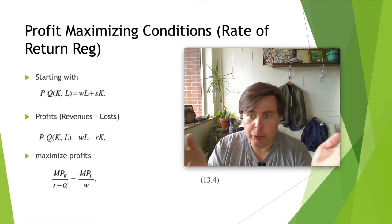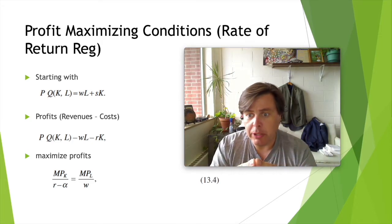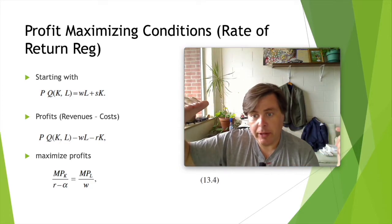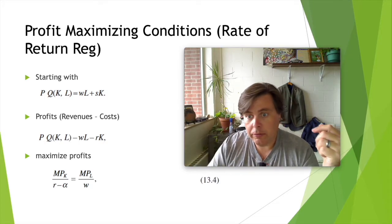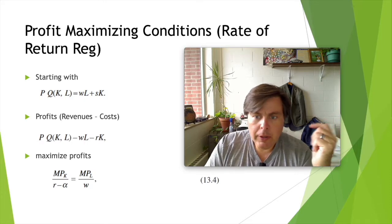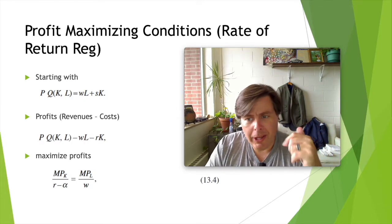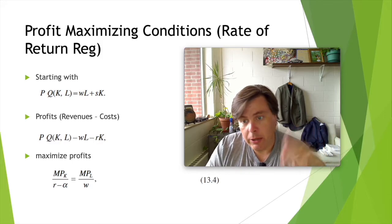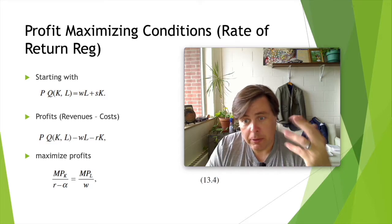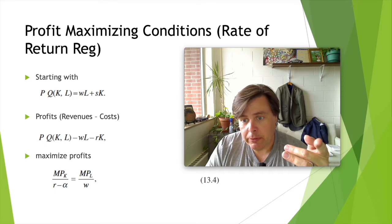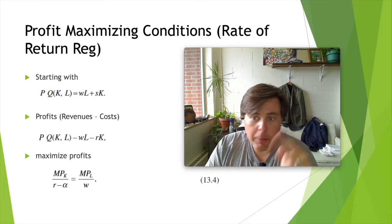If we weren't simplifying down to two inputs, the profit-maximizing mix would use that same ratio — the marginal product of a factor over its price — across all factors. Essentially you're equalizing bang for buck for each factor. Now, some of you may be looking at this and saying, what's that alpha term? Normally we'd say just MPK over R, the marginal product of capital over the price of capital R. But we're introducing alpha here as the difference between the allowable return on capital and the market price of capital.